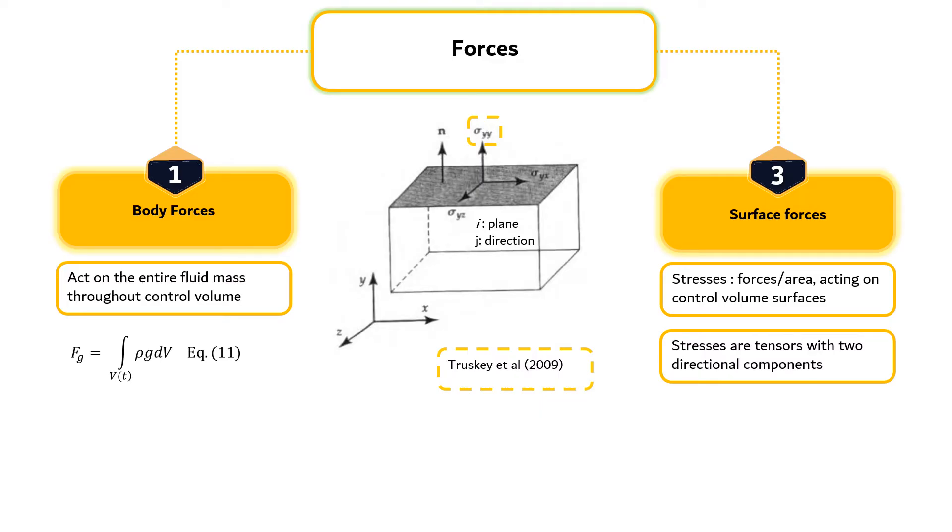The orientation of each surface can be described in terms of a vector n of unit magnitude that is normal to and directed away from the surface. Stresses act normal or tangent to a control volume surface. Tangential stresses are also known as shear stress.